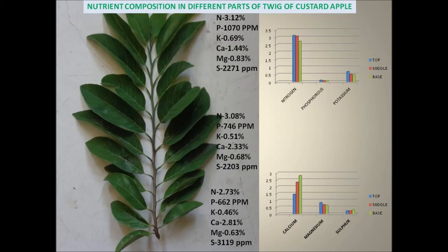In custard apple, based on maturity of leaf, nutrient stabilization, and nutrient behavior, the July month sampling from twigs which contain at least 20 to 26 leaves, specifically leaves from the middle part of the twigs, and a sample size of 20 twigs are preferred for leaf sampling to diagnose the nutrient status and for further fertilizer recommendations in custard apple.